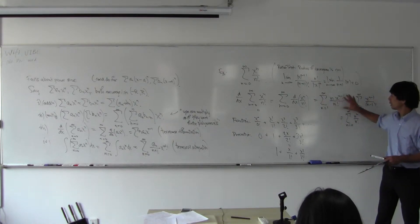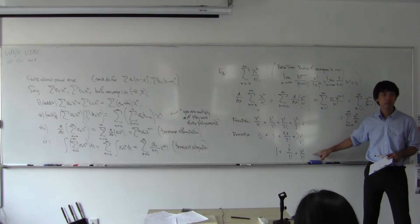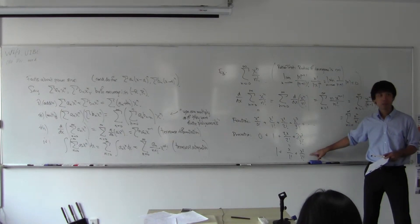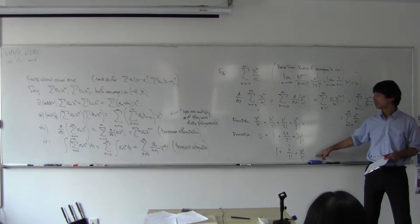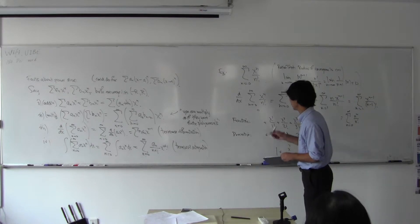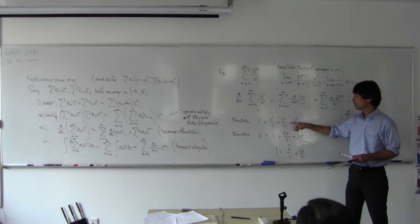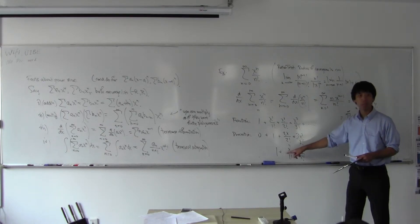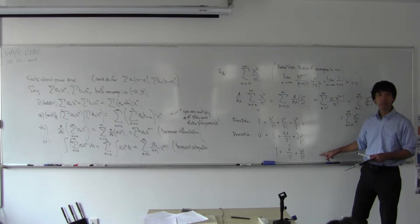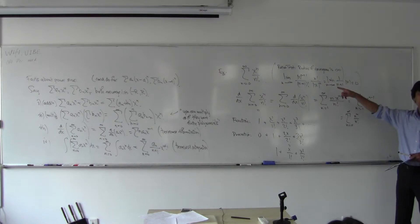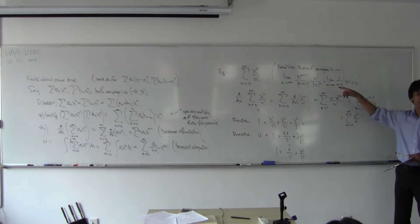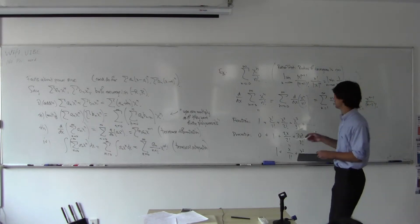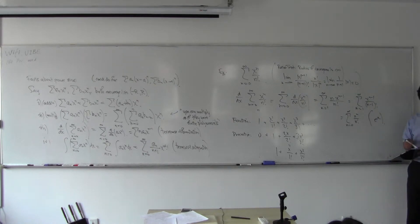I hope you can see it right here: when you differentiate this series, you get the same series back. You get exactly the same guy. So whatever this function is, it's something whose derivative is itself. What function do you know whose derivative is itself? E to the x. In fact, this function is e to the x.